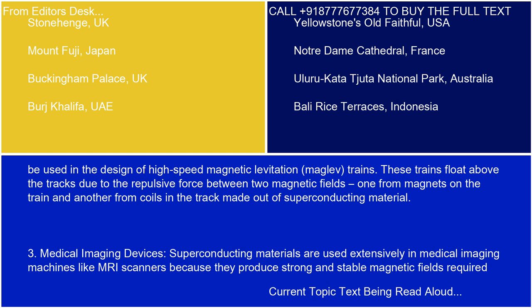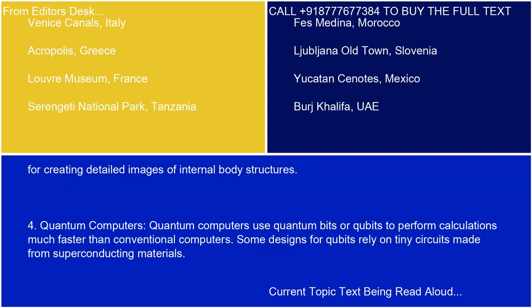Three, medical imaging devices. Superconducting materials are used extensively in medical imaging machines like MRI scanners because they produce strong and stable magnetic fields required for creating detailed images of internal body structures.